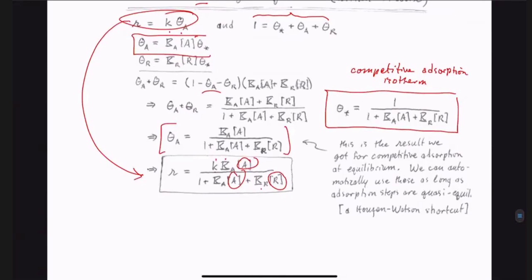From this, you can see all kinds of things, all kinds of predictions emerge. You get reaction orders. You can see how R depends on temperature if you know how K, Ka, and Kr depend on temperature.